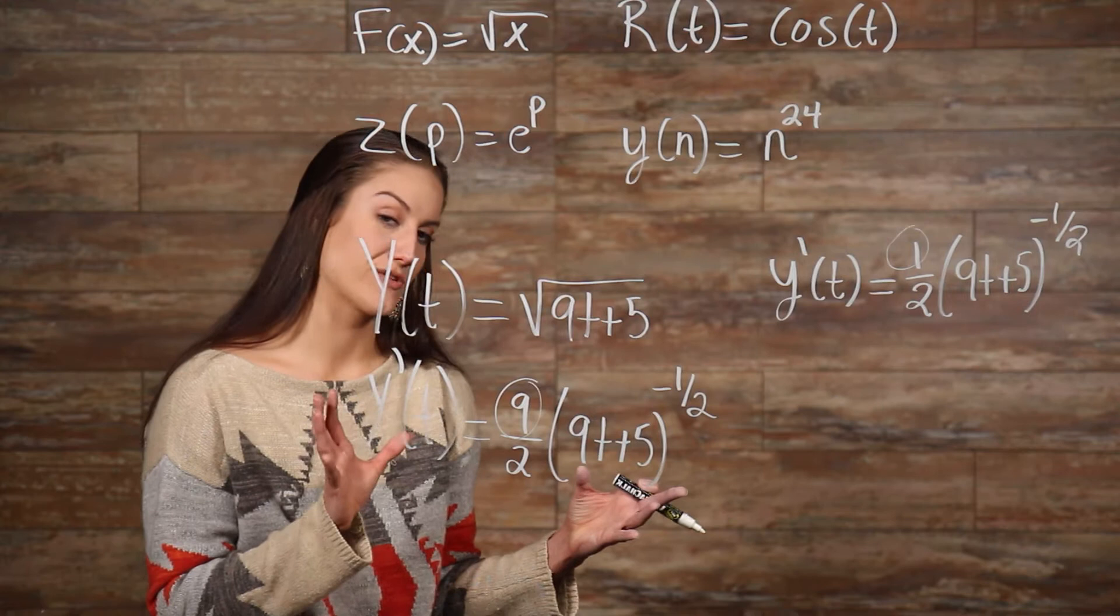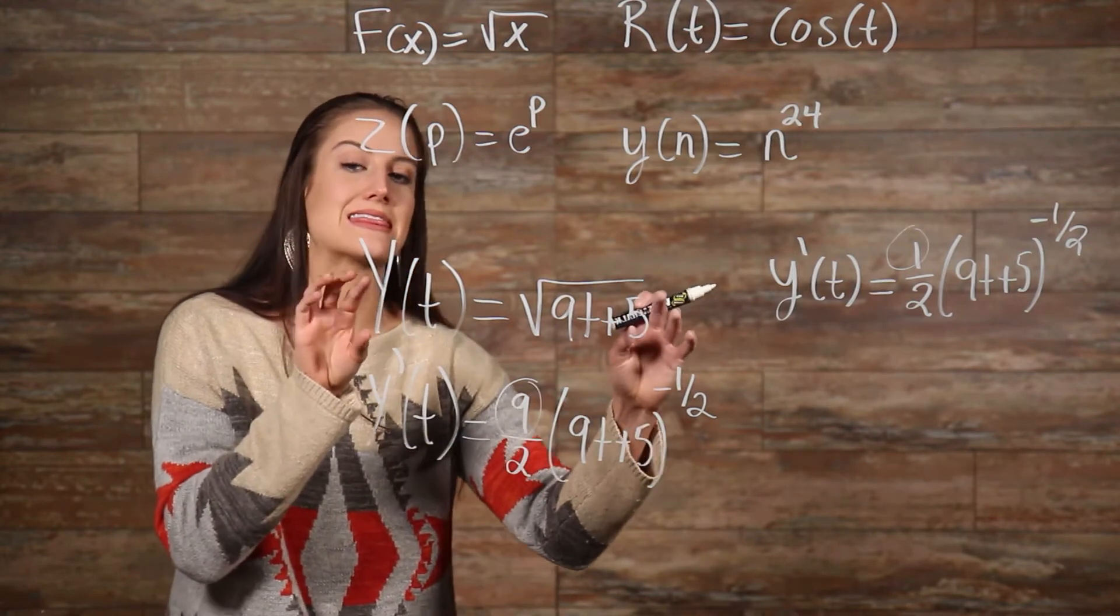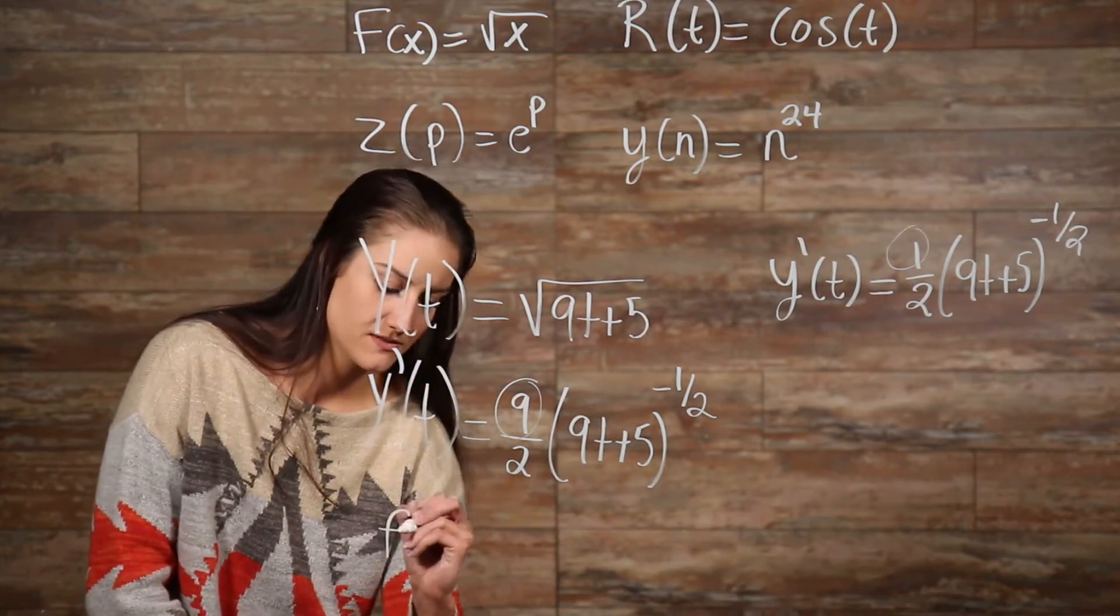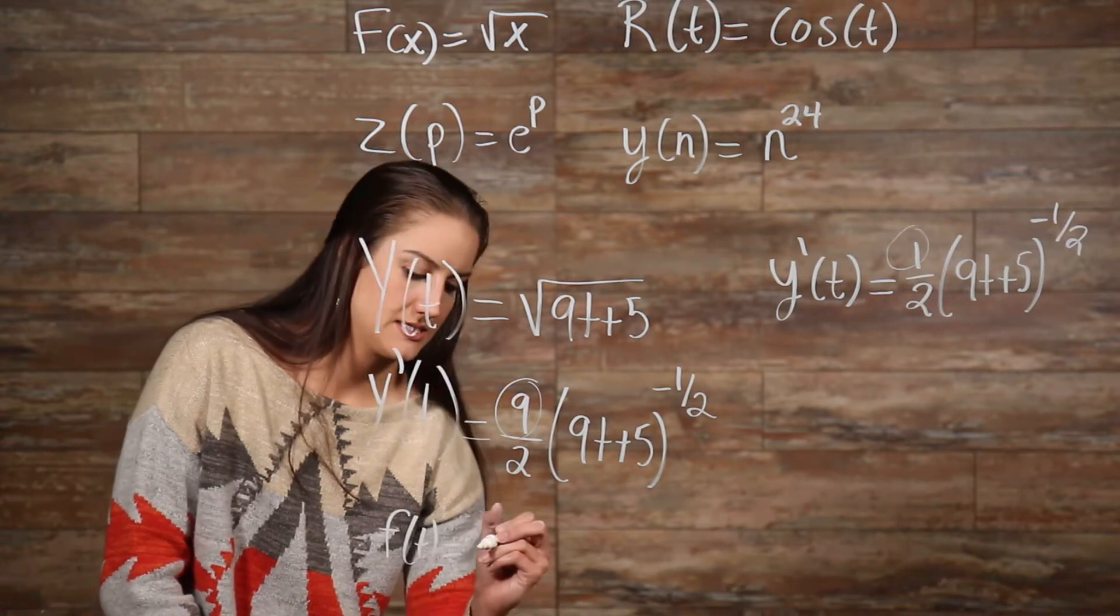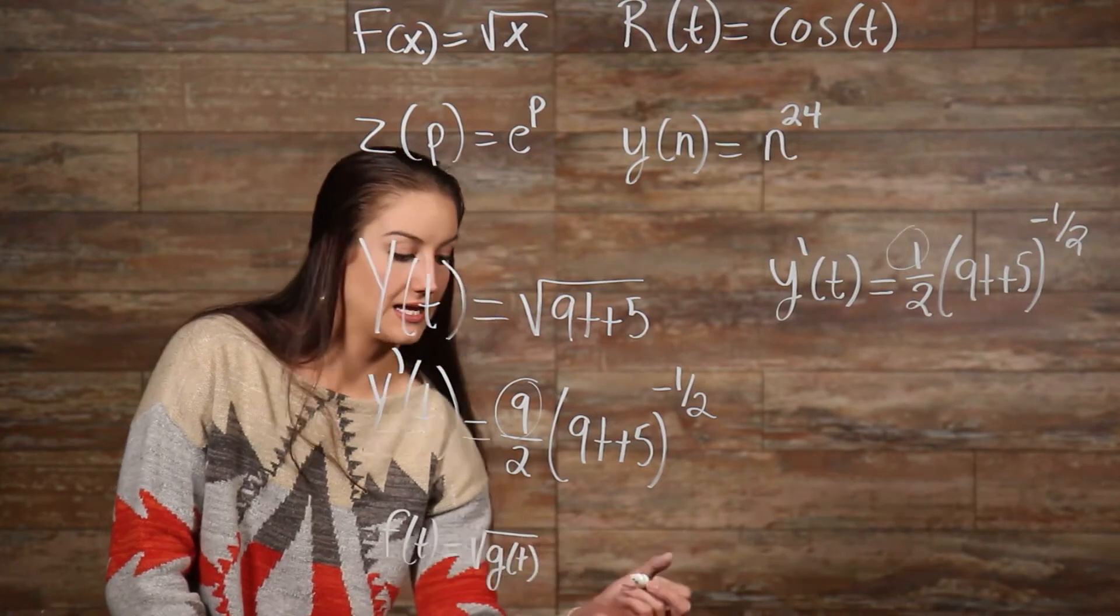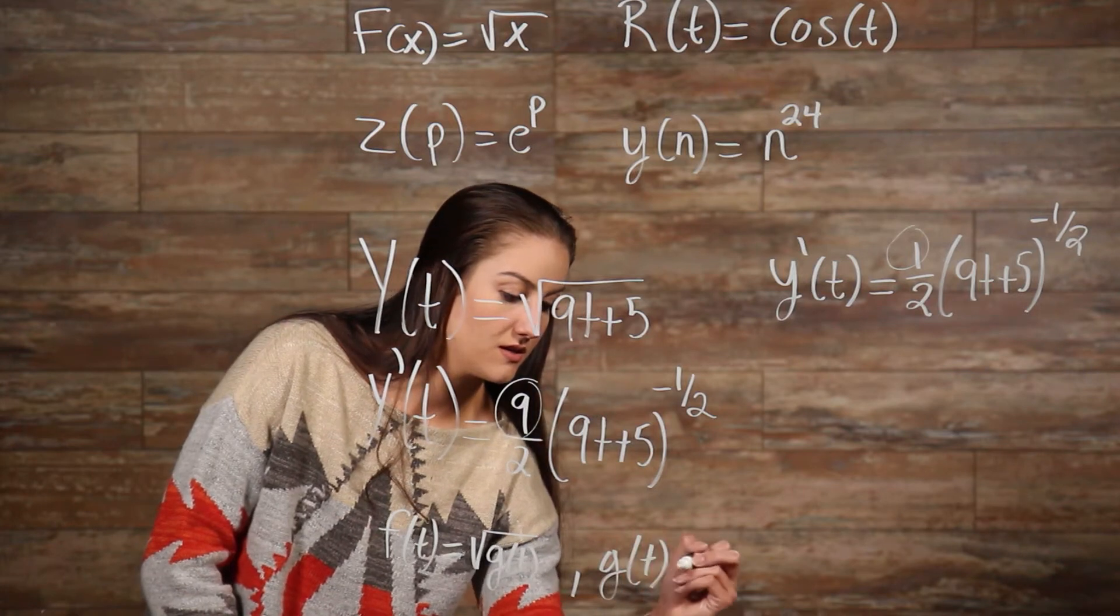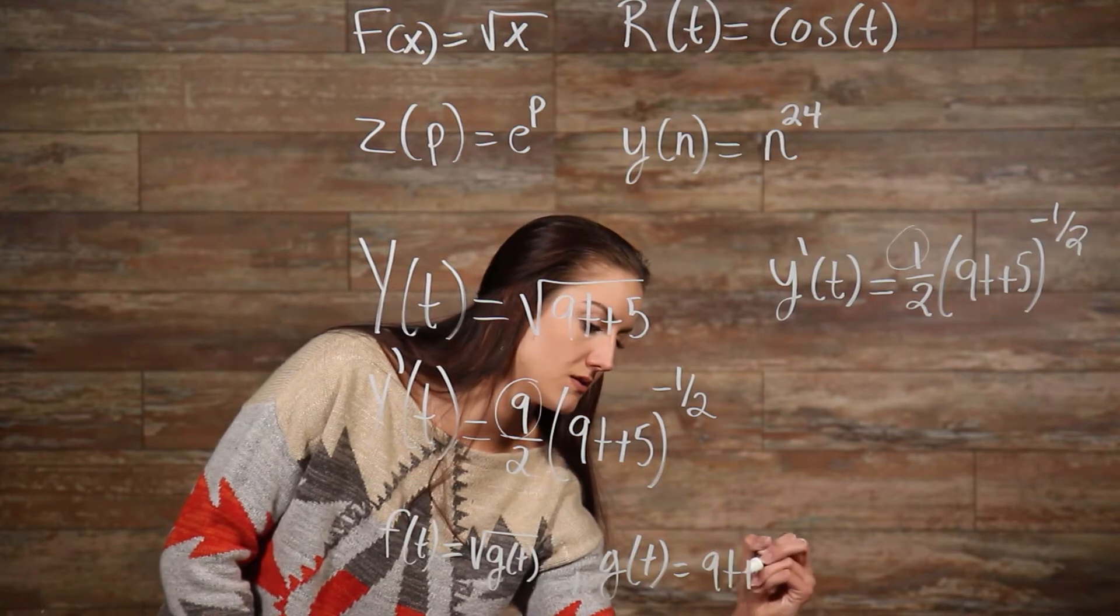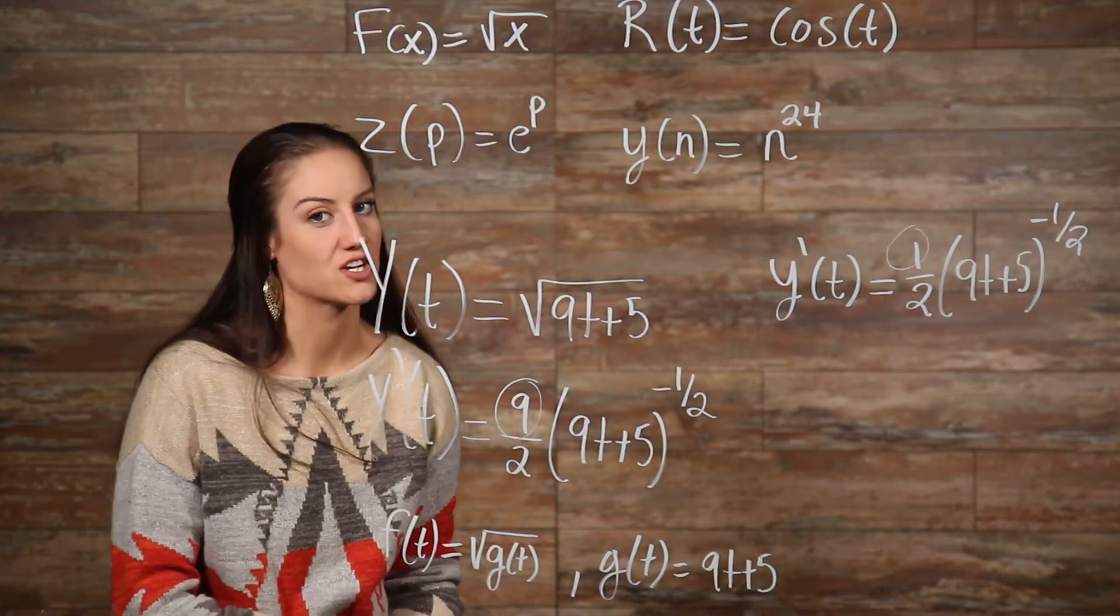We could use the definition of a derivative to take the derivative of a function every time, but if we take a close look at this function, we could say that f is equal to square root of g, and then our g is equal to everything on the inside here. Then what we could do is write it as a composition function.